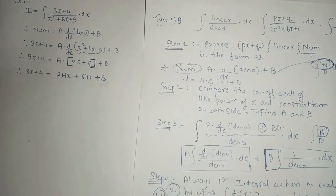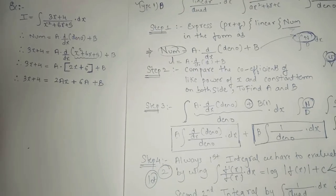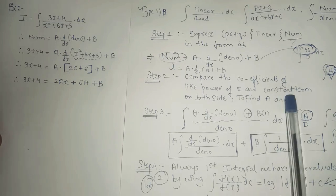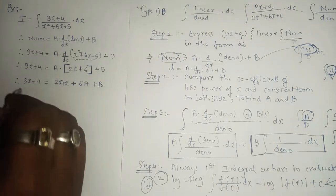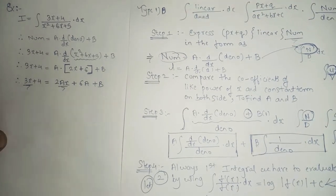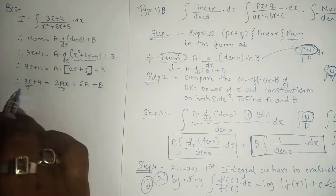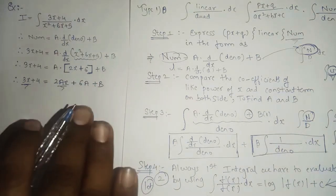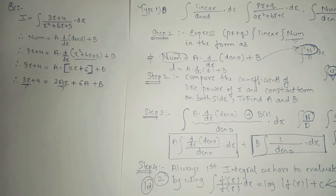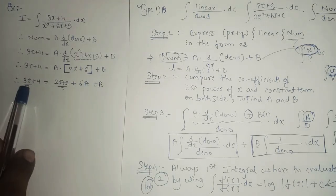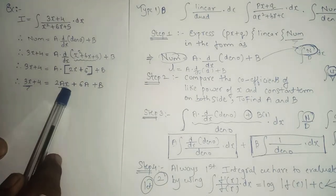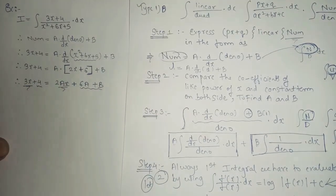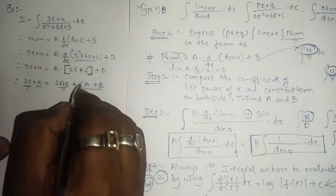Step number two says to compare the coefficient of like powers of x and the constant term. We consider the left-hand side and right-hand side. The x terms give 2A equals 3, so A equals 3 over 2. The constant terms give 6A plus B equals 4.